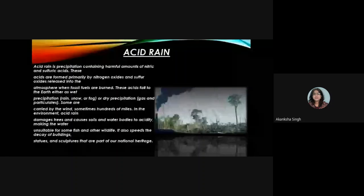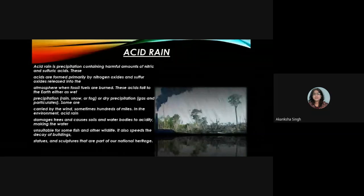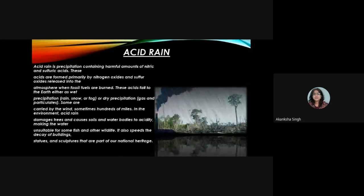Acid rain is precipitation containing harmful amounts of nitric and sulfuric acids. These acids are formed primarily by nitrogen oxides and sulfur oxides released into the atmosphere when fossil fuels are burned. They fall to the earth as wet precipitation such as rain, snow, or fog, or as dry precipitation such as gas and particulates.